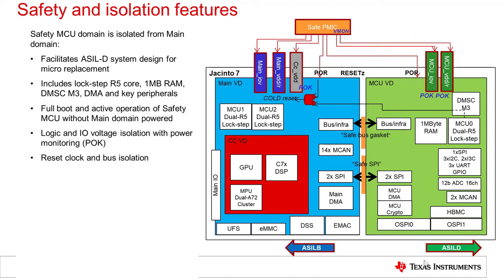The domain has isolated clocks, resets, and voltage supplies, such that it can operate even if the main domain has become corrupt or is in an invalid voltage state. The R5 can utilize a local 1 megabyte RAM for program and data space, or it can extend the program space to an external flash via the external flash controller, which also supports inline ECC and other safety features.